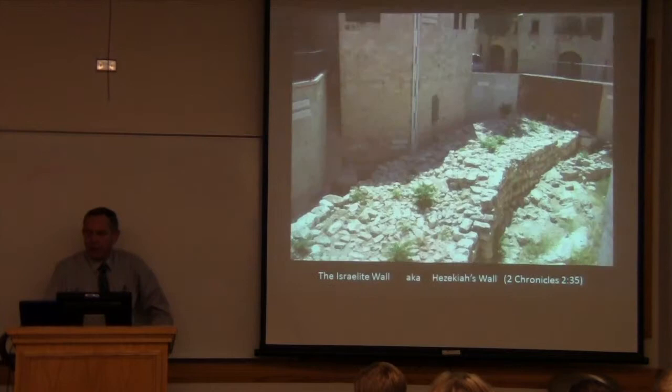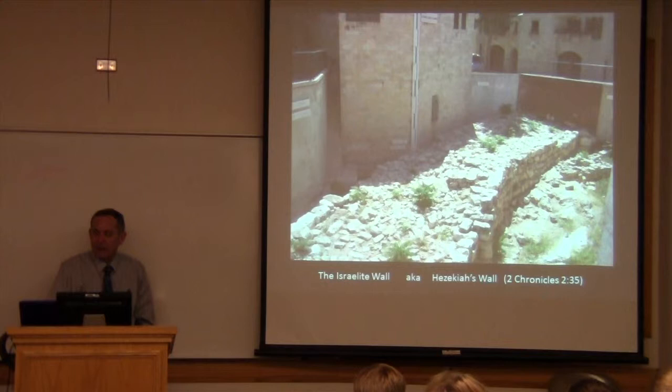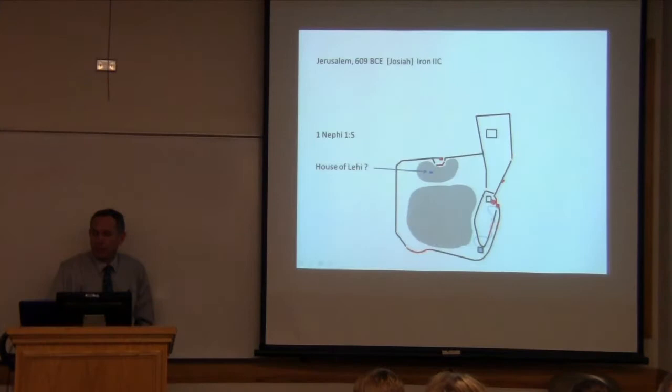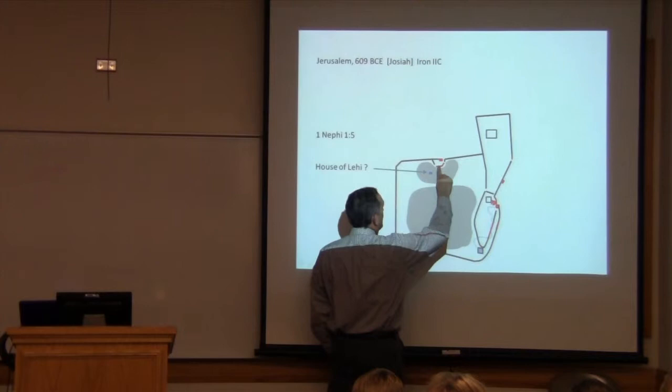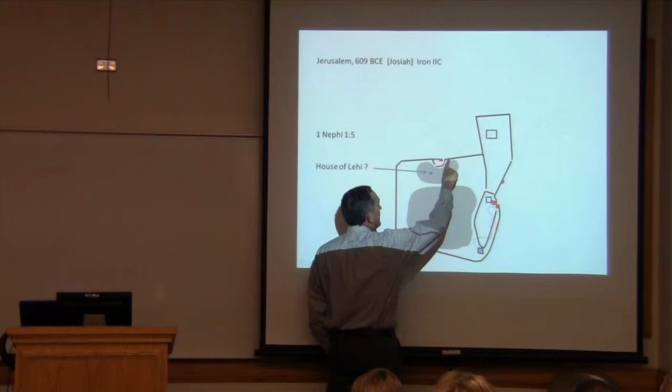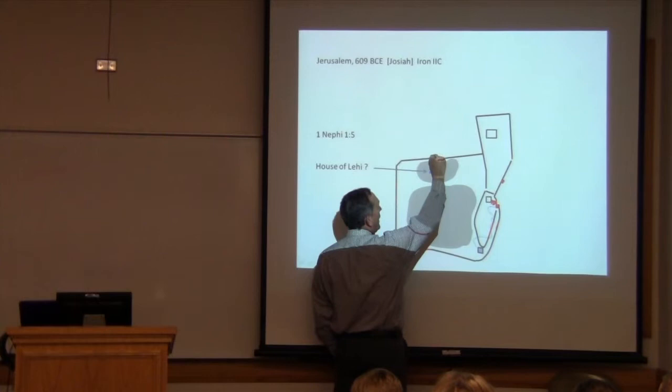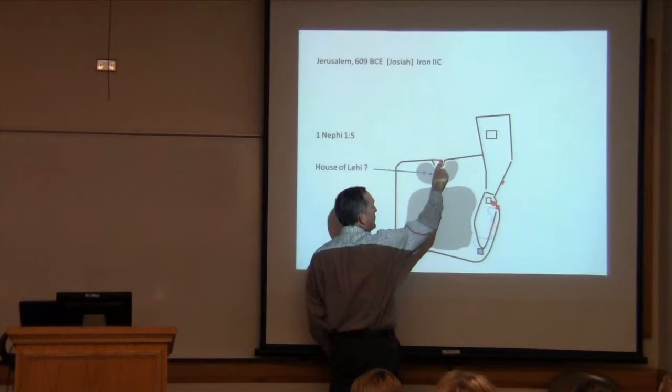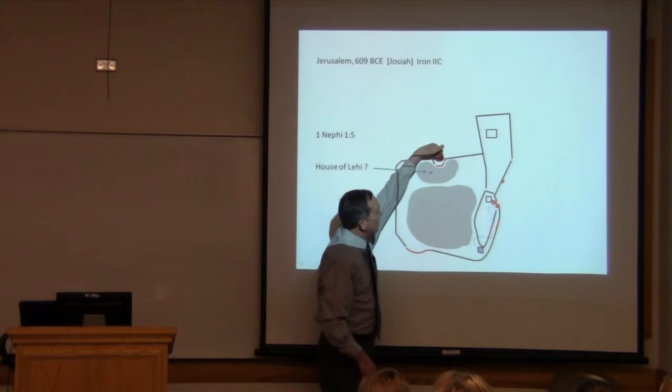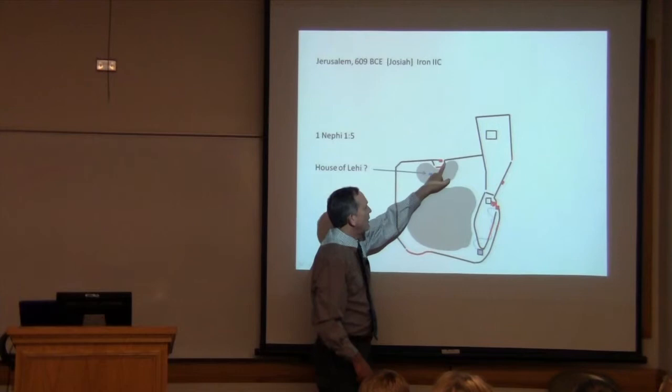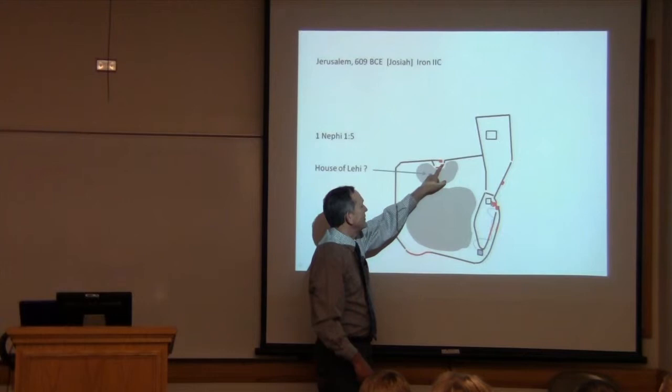This was the northern gate area. And something that had happened in Lehi's time was that the dip that followed the natural topography here was deemed to be a weakness in the line of the wall. So probably during the reign of Josiah, another portion was added right here, and the gateway narrowed, and a protective tower was built. So whereas in King Hezekiah's time that's how the wall looked, by Josiah and Lehi's time, this is how it looked. This wall was actually more or less inside the gate.